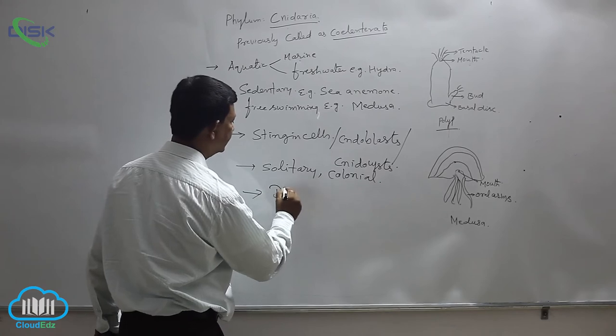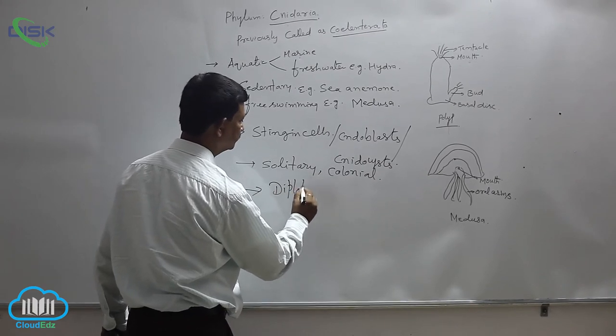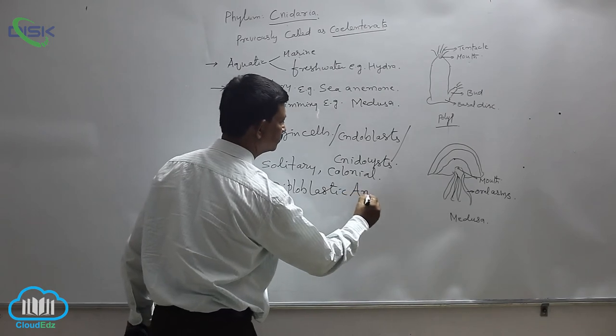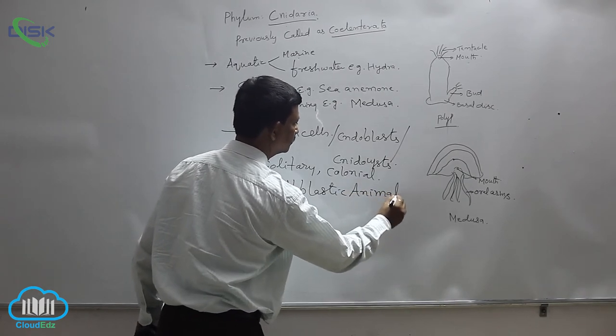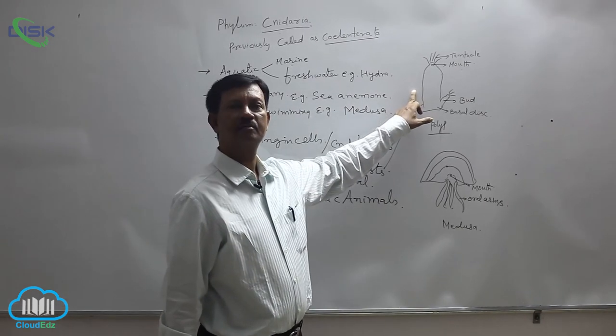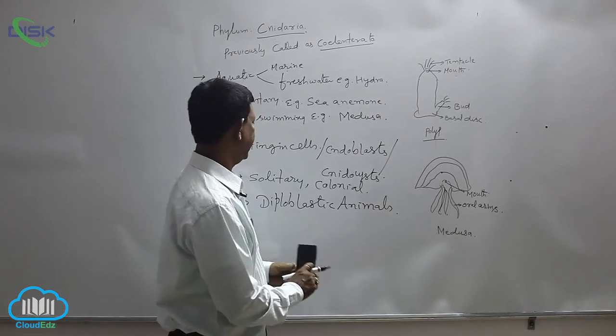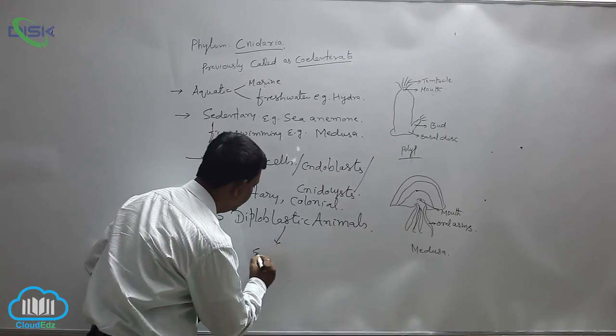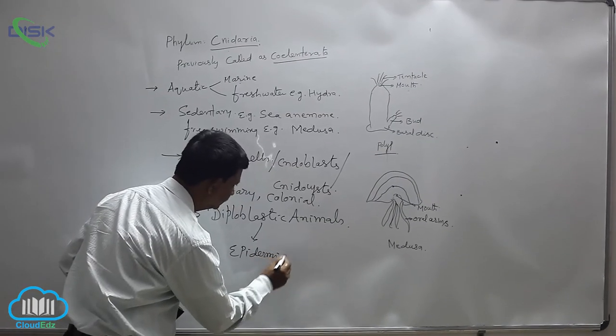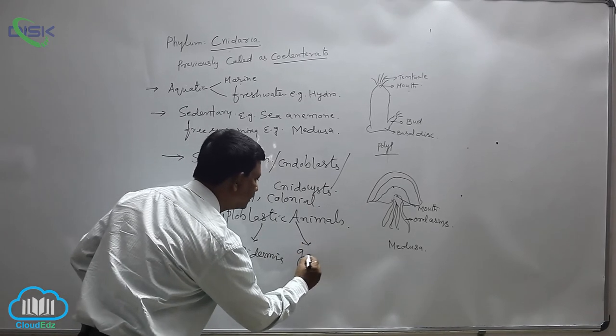They are diploblastic animals. In the body wall, there are two layers present. The outer layer is known as the epidermis, inner layer is known as the gastrodermis.